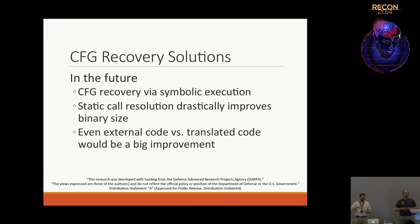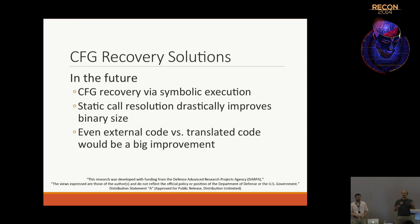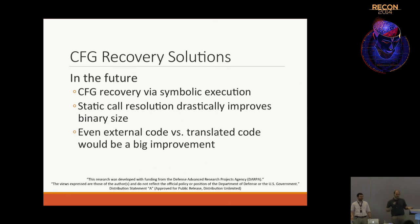We have some ideas on how to perform control flow recovery inside our framework in the future. There has been work done by a group in France called the Insight group — they don't translate to LLVM but have an elegant framework that performs symbolic execution on their intermediate representation to derive more control flow targets. We could do something similar: perform partial control flow recovery using linear or recursive descent, switch to symbolic execution when we can't see through something, and switch back and forth between these two modes until we run out of code to disassemble.